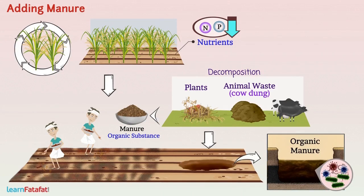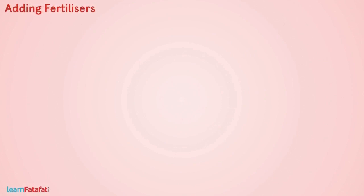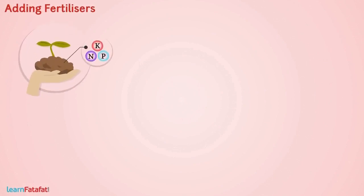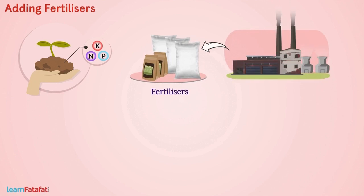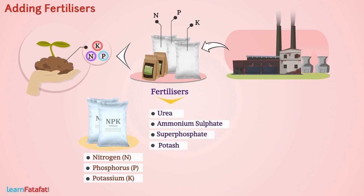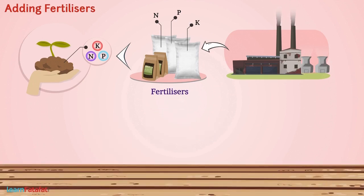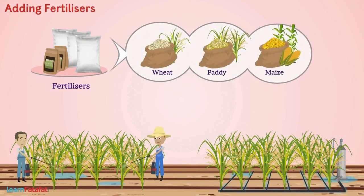Adding manure to soil is called manuring. Improper and insufficient addition of manure results in weak plants. Another way of enriching soil with nutrients is by use of fertilizers — chemical substances produced in factories that are rich in particular nutrients. For example, NPK contains nitrogen, phosphorus, and potassium. Other fertilizers include urea, ammonium sulphate, superphosphate, and potash. Fertilizers are provided by spraying or through irrigation, and their use has significantly improved production of wheat, paddy, and maize.